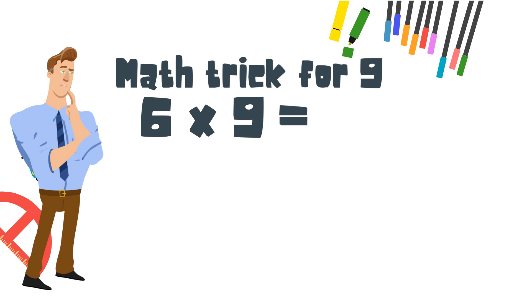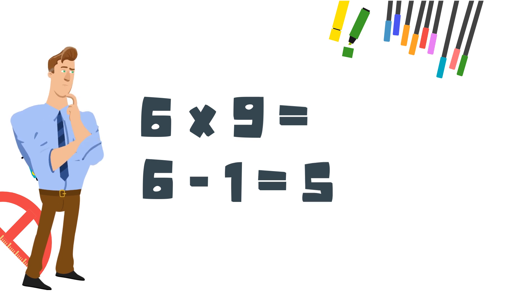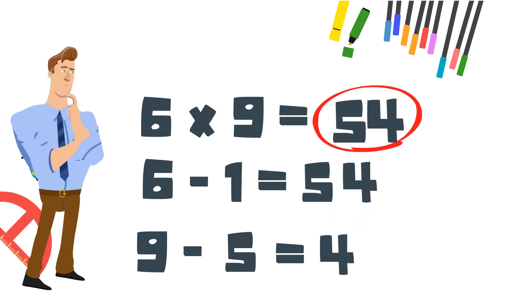Step 1. Take the number you are multiplying 9 by and subtract 1. This number is the first digit. Step 2. Take the first digit from step 1 and subtract this from 9. This is the second digit of your answer.